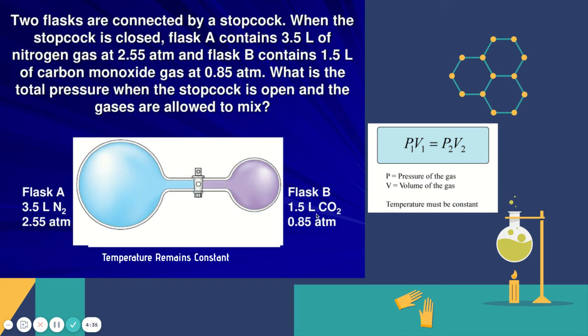So we can't just take our P1 and our P2 and add them together because our volume changed, our volume went from 3.5 liters on one side and 1.5 on the other to 5 liters total so that's when we have to use something like Boyle's law which as a reminder is P1V1 equals P2V2 when pressure and volume are both changing.